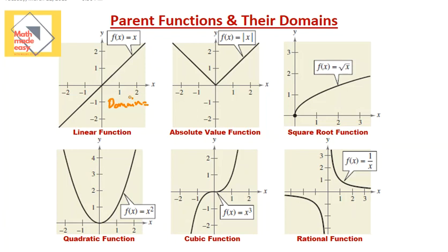In a linear function, the domain is all real numbers. The line extends — for every value of x like 1, 2, 3, 4, and so on, there will be a representation on the line. There is a point where x equals 1 and y equals 1, where x equals 2 and y equals 2, and so on. So the domain is from negative infinity to infinity, which means all real numbers.